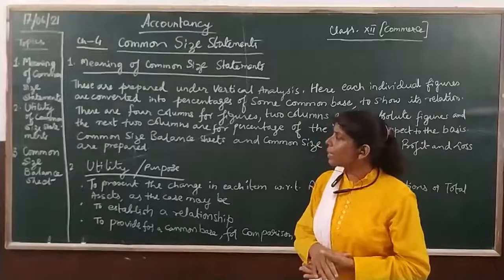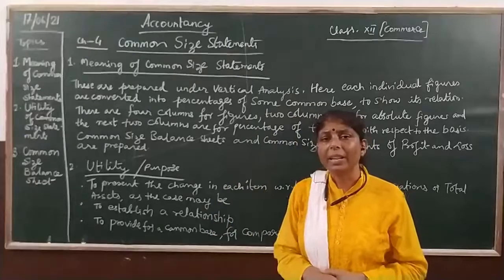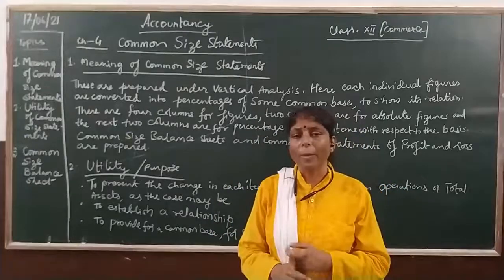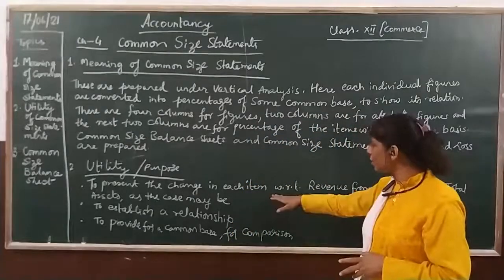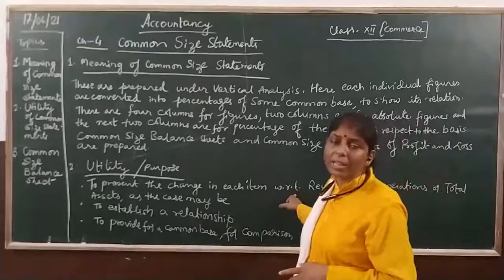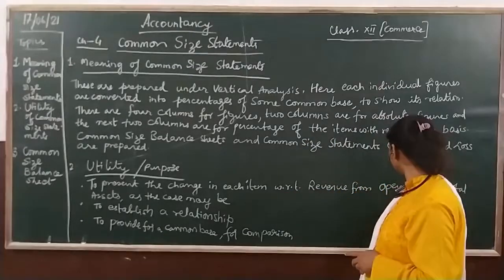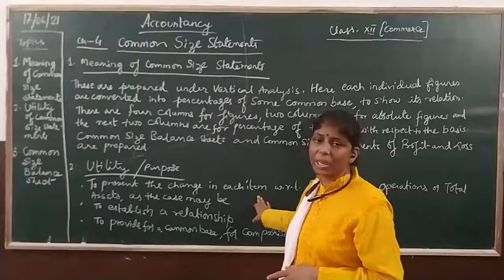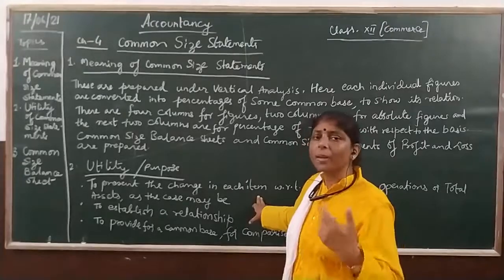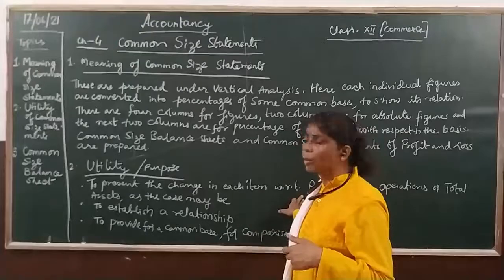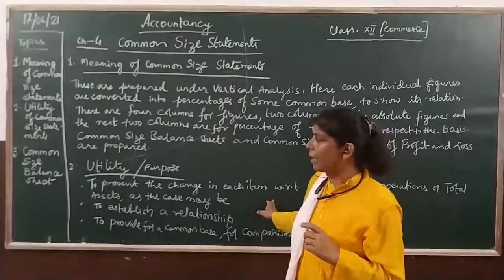Now we move on to the utility of common size statements. What is the purpose? Why are we making it? The purpose is to present the change in each item with respect to revenue from operations, or total assets, as the case may be. For balance sheet, the basis is total assets or total liabilities; for profit and loss, it is revenue from operations.